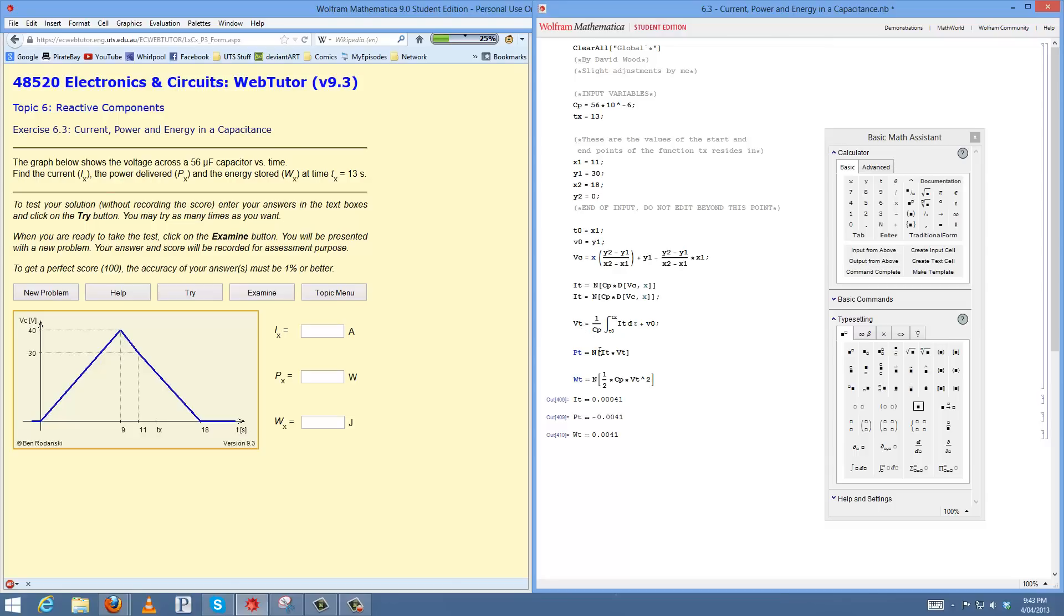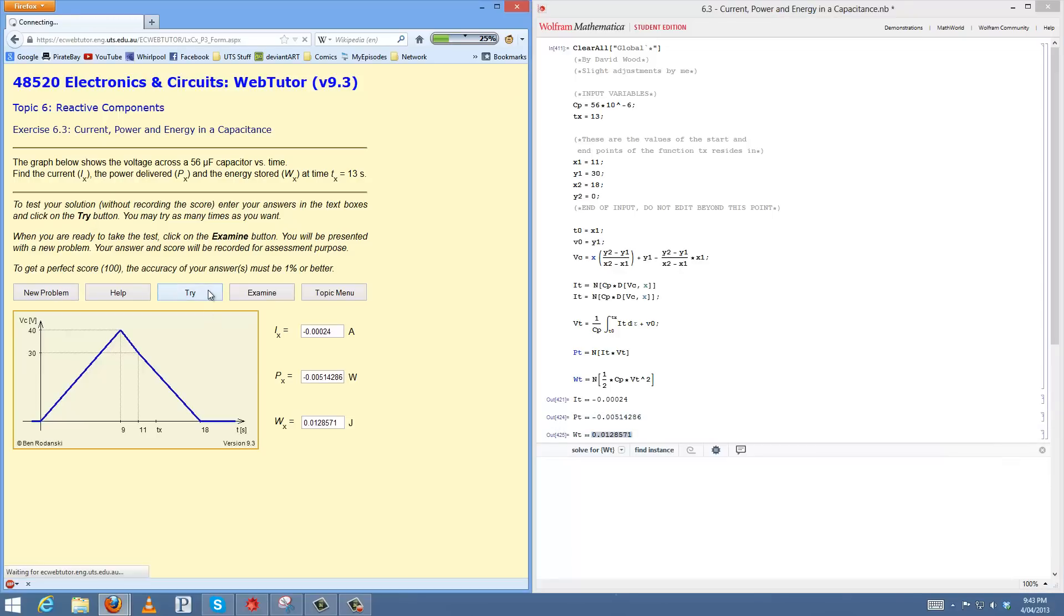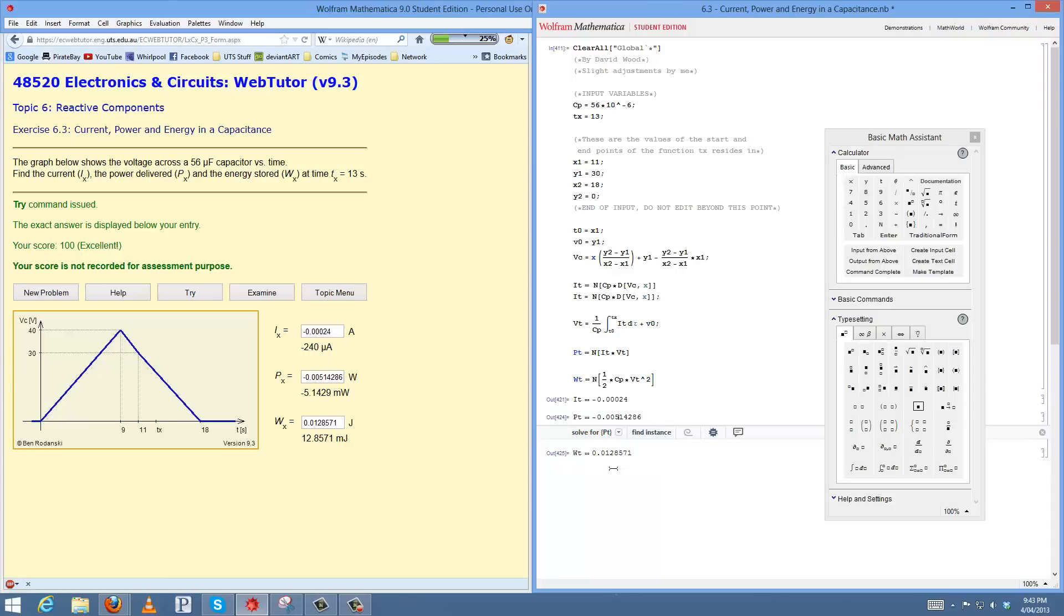And then from there, multiply again by the current function, and then another equation, which you can find in help. It's all pretty straightforward. Another one with just equations, but once you've got all these done, just plugged in, shift enter, copy your values in, hit try. Voila! 100%. That's all there is to it, really.